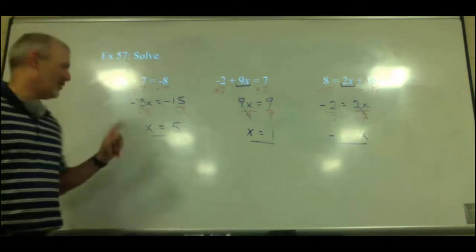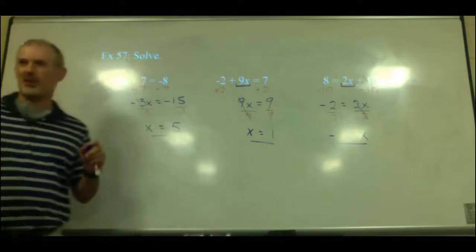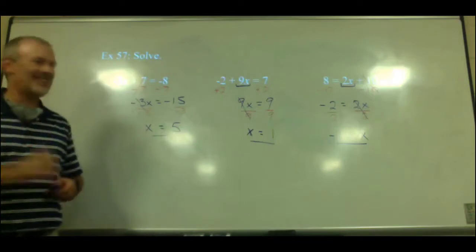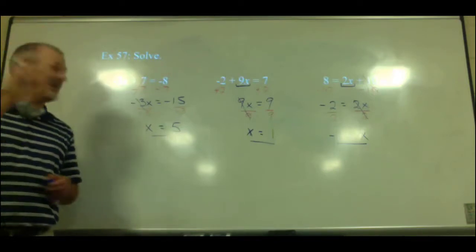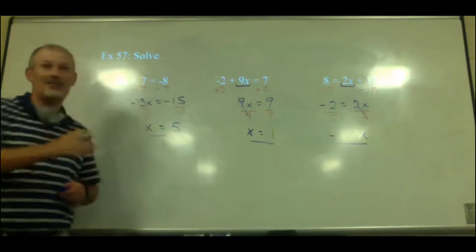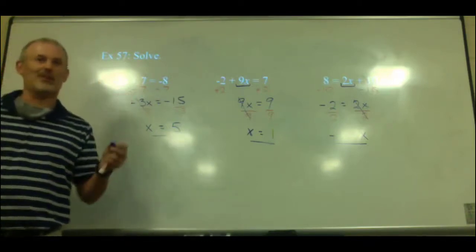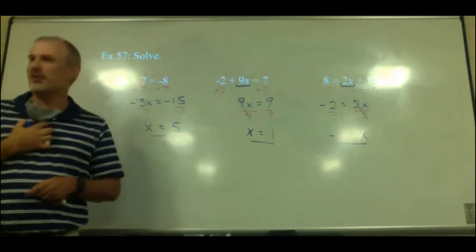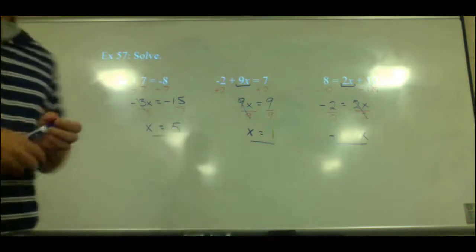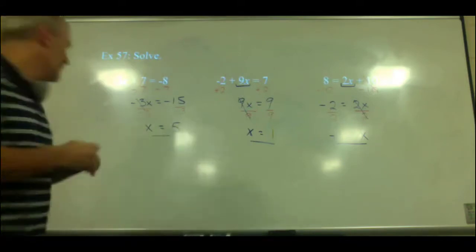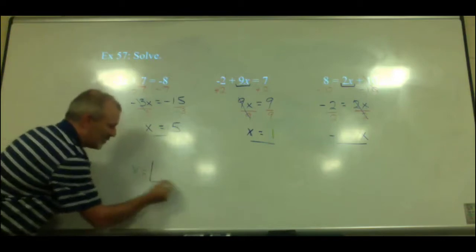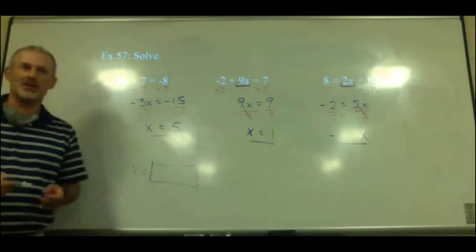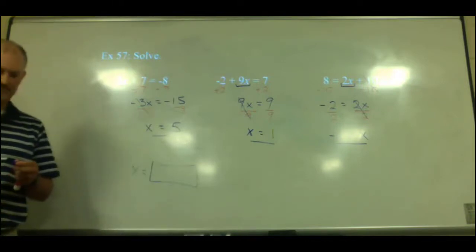On the homework, in front of the box it probably says x equals and you just put the number in. Just be careful — if you put x equals 5 and it has the x out in front, it might think you gave the wrong answer. All you have to put in there is the number: the 5, the 1, or the negative 1.